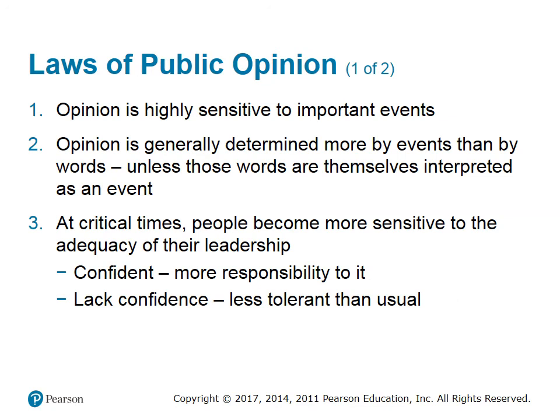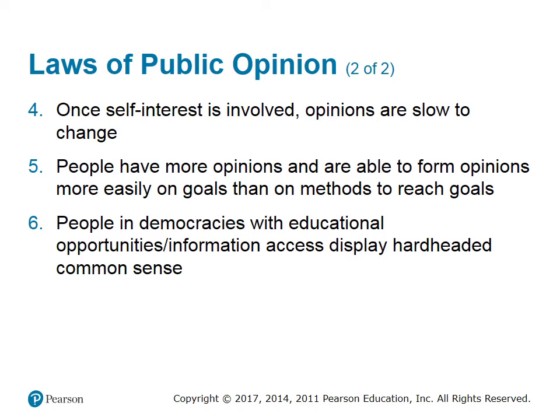Laws of public opinion: opinion is highly sensitive to important events. Events of unusual magnitude are likely to swing public opinion temporarily from one extreme to another. Opinion is not stabilized until the implications of events are seen in some perspective. Opinion is generally determined more by events than by words, unless those words are themselves interpreted as an event. At critical times, people become more sensitive to the adequacy of their leadership — if they have confidence in it, they are willing to assign more than usual responsibility to it; if they lack confidence, they are less tolerant. Once self-interest is involved, opinions are very slow to change. People have more opinions and form them more easily on goals than on methods to reach those goals. In a democracy, if people are provided with educational opportunities and ready access to information, public opinion reveals a hard-headed common sense.